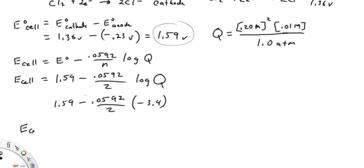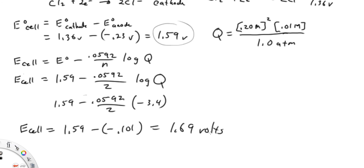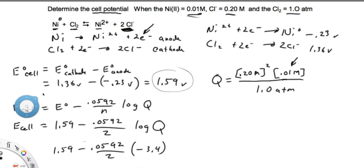So E_cell equals 1.59 minus (−0.101), which equals 1.69 volts. Our voltage actually goes up because we have a lower concentration of our products — that shifts the equilibrium to the right, increasing the voltage. The final cell potential is 1.69 volts.